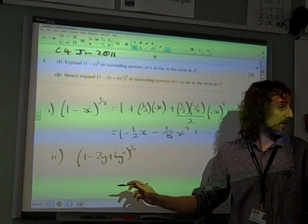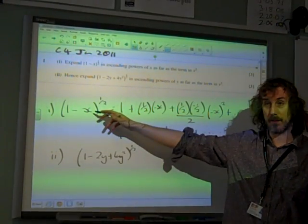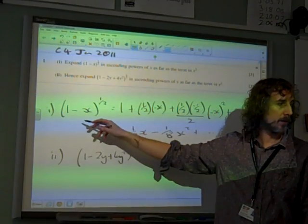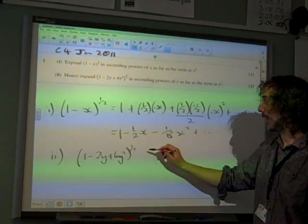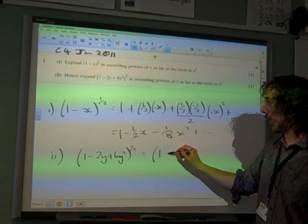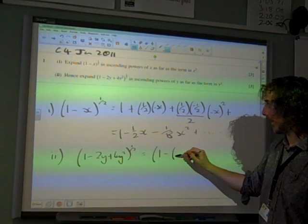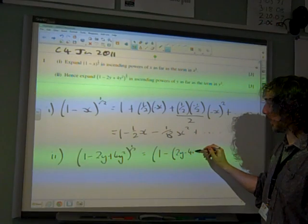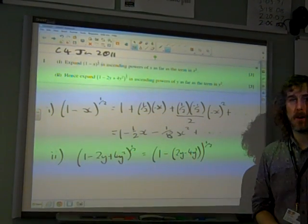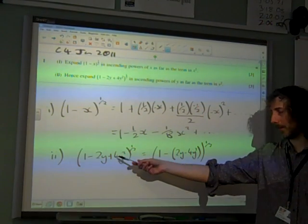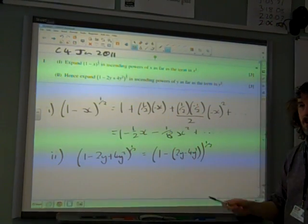Because it says hence, we've got to make some connection between that and that, haven't we? And this is 1 minus something. So let's write this as 1 minus something. It is 1 minus, well, the something is 2y minus 4y squared.